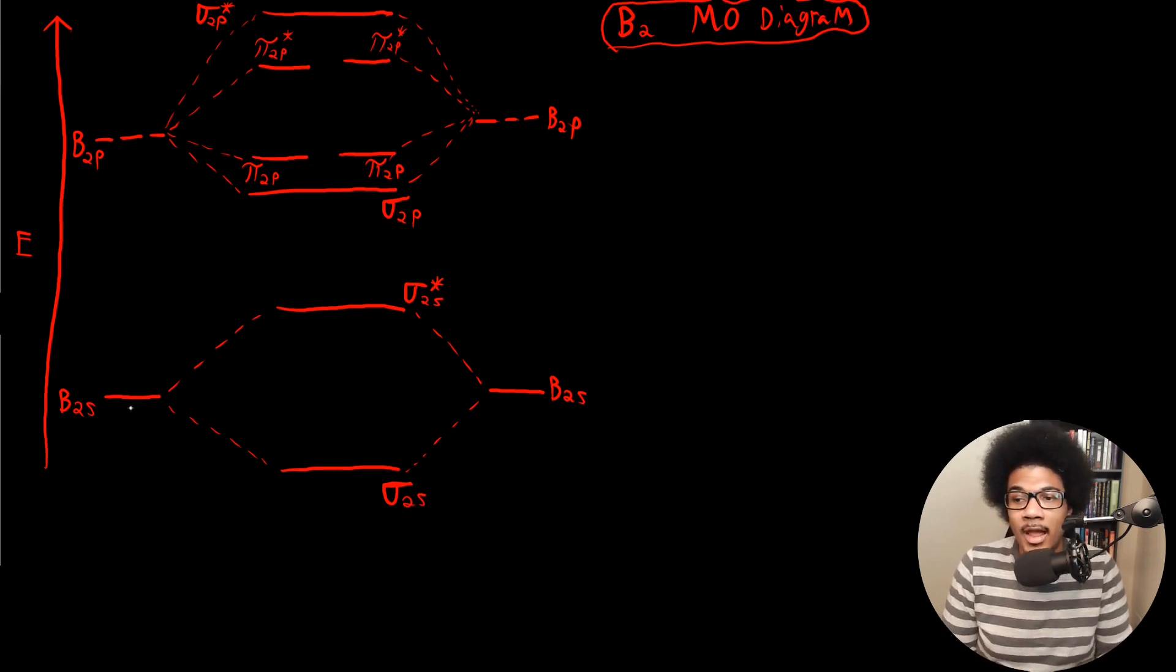The same type of splitting that we saw for hydrogen and lithium. So you're going to have these 2S orbitals coming together, mixing together to form a sigma star 2S and a sigma 2S bonding orbital. And what we talked about in the last video, when we have P orbitals come together, we have this splitting. So when the boron 2P orbitals come together, we form a sigma 2P bonding orbital and two pi 2P bonding orbitals and their antibonding equivalents up top.